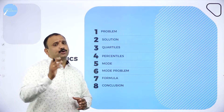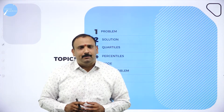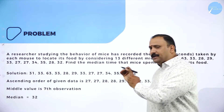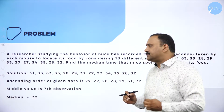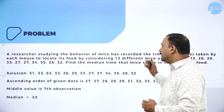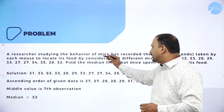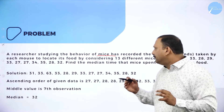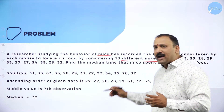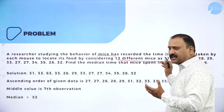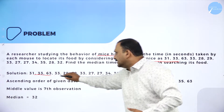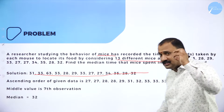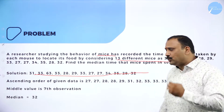Let's start with a simple problem. A researcher is studying the behavior of a particular organism — let's say mice. He has used 13 different mice and these are the values given: 31, 33, 28, 29, 33, 27, 27, 34 — there are about 30 numbers being projected here, and you need to observe those values.